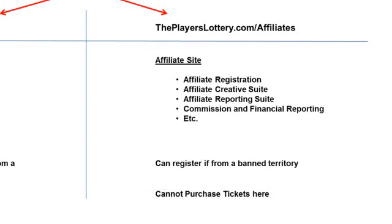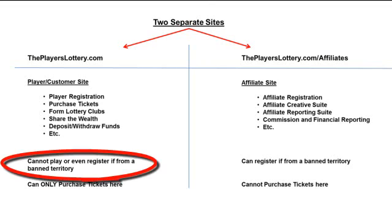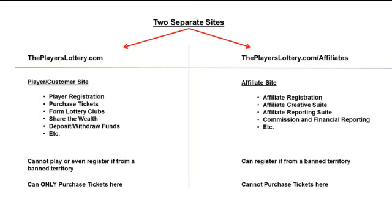The affiliate site has its own registration and login, and this is the place to go and get your banners and links, to see the performance of all your posted creative, and to check how you're doing financially in respect to player purchases and your commissions. The reason there are two completely separate sites is to accommodate those affiliates who reside in banned territories but target customers outside of those banned territories, which is perfectly legal and allowed by our licensing. Affiliates in banned territories are not allowed by law to purchase tickets for the lottery, or even register as a member on our gaming site, theplayerslottery.com. By having two sites, we can accommodate those affiliates from banned territories by forming a strictly business-to-business sales arrangement, with no option to gamble illegally.